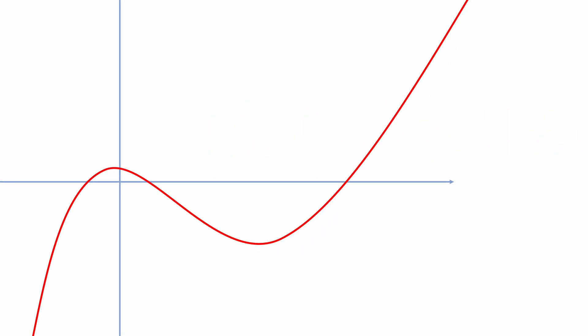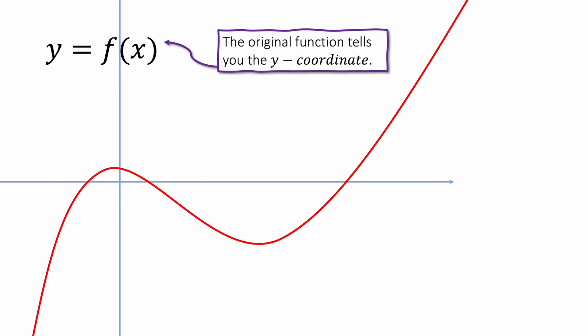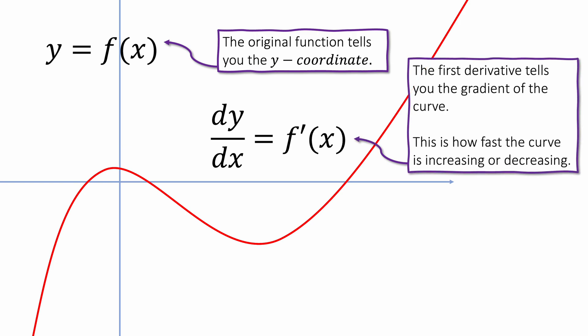We can have a function and a curve like this in a graph, given by y equals f of x. The original function gives us the equation for the y coordinate. We can then differentiate that, and the first derivative tells you the gradient of the curve at any point.